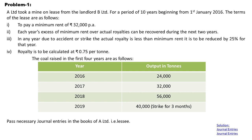In 2019, there was a strike for 3 months. From all this information, we have to pass necessary journal entries in the books of A Limited, that is the lessee.